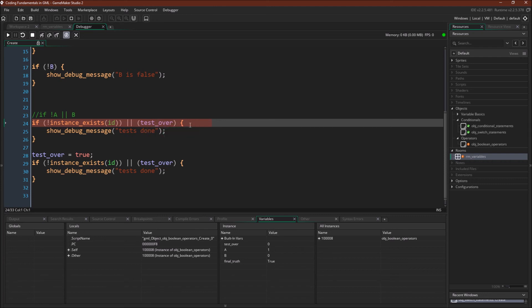So both of these things are false. So it's going to skip that code. Now let's switch test over to true. So test over now equals true.